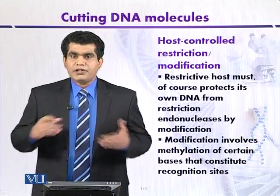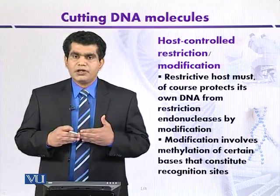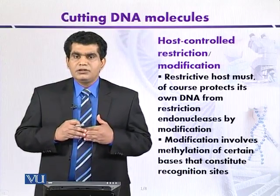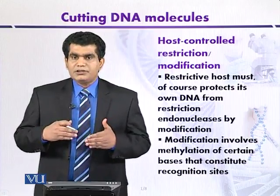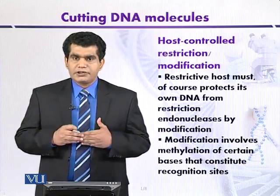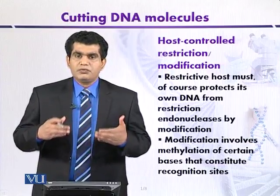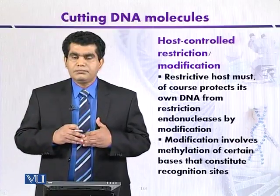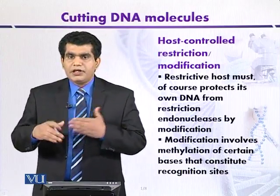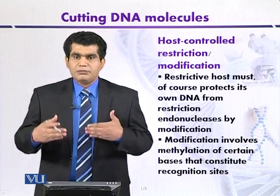This explains why bacteriophage lambda that has survived one cycle on the second host, E. coli K, is no longer restricted during second-time multiplication — because its DNA was methylated during the process of replication in the first cycle. This is one example of restriction and modification explained with reference to bacteriophage lambda and a host bacterium. There may be other examples as well, such as DNA transfer from bacteria to bacteria, which can also be restricted. This example of bacteriophage lambda has been used for convenience.